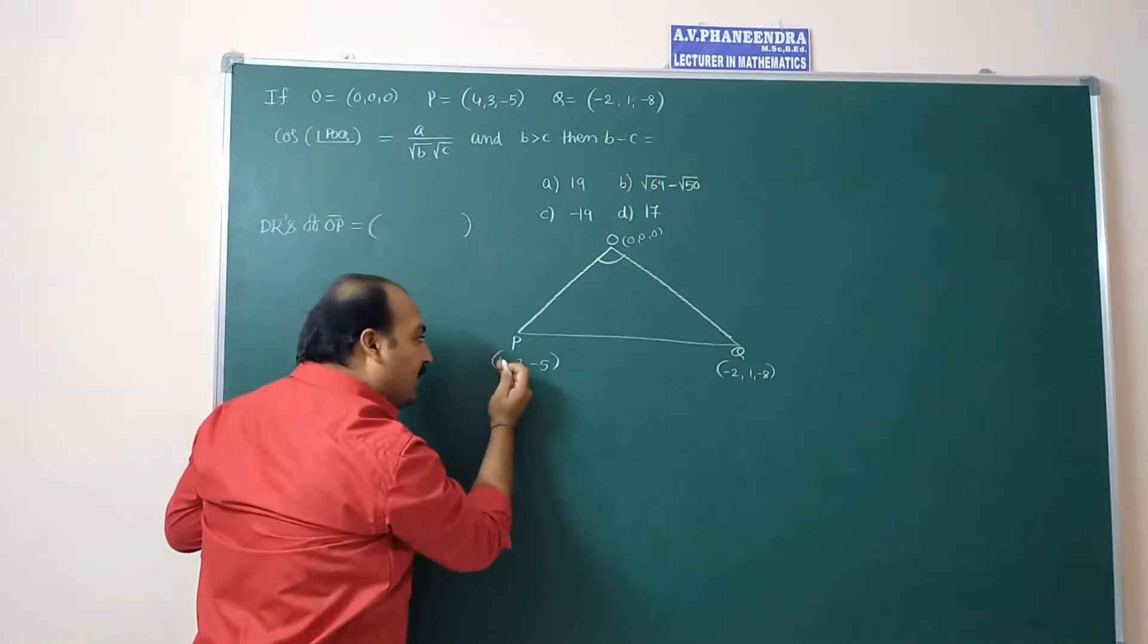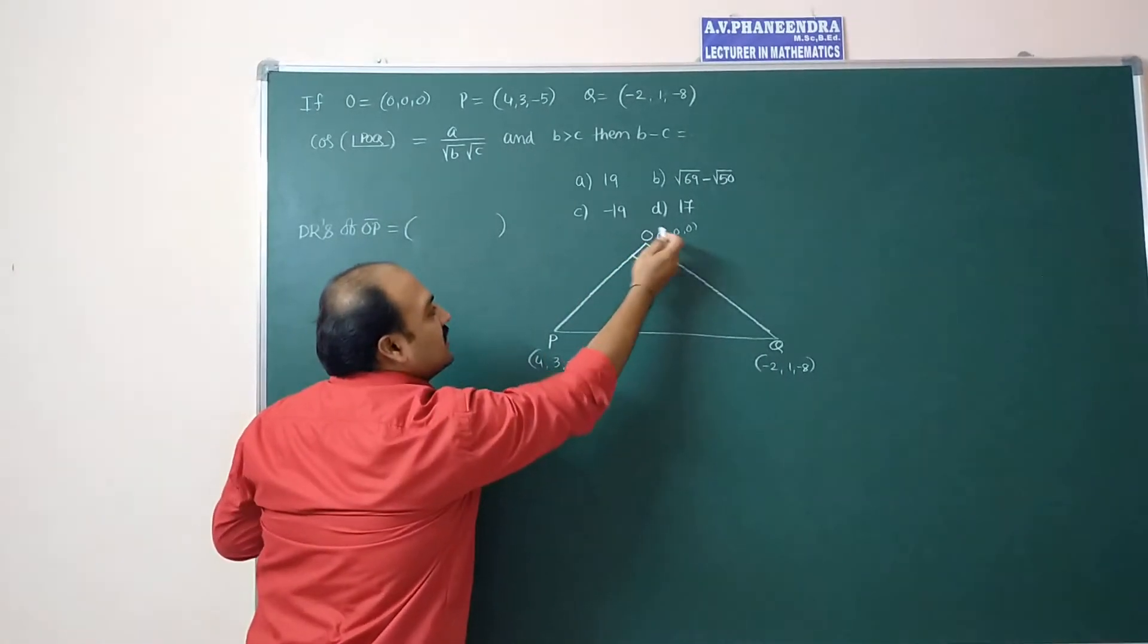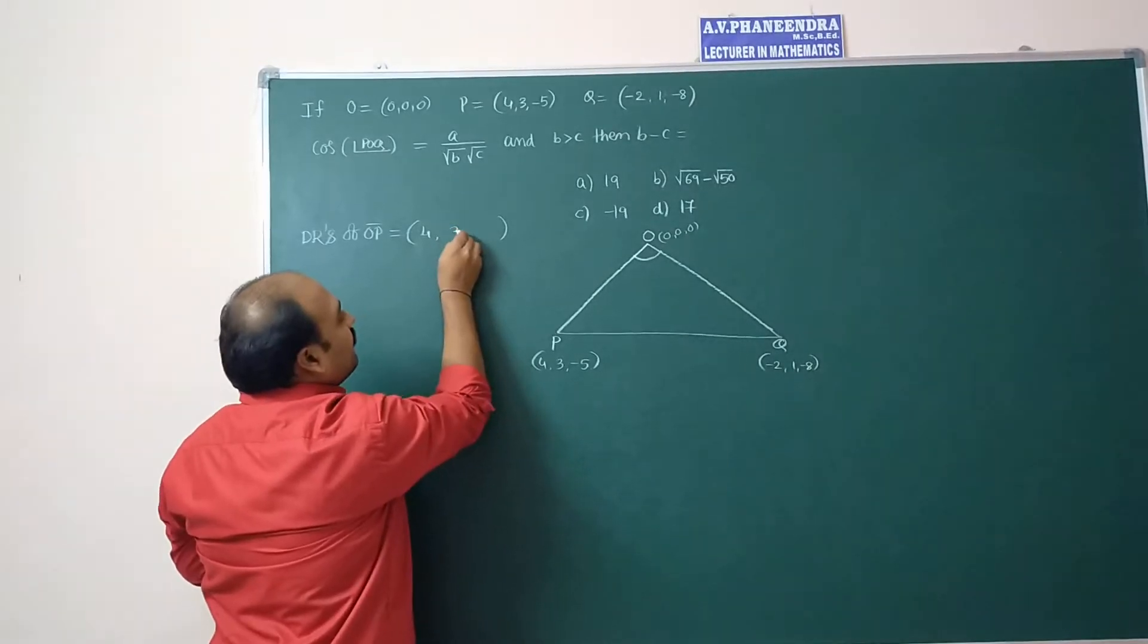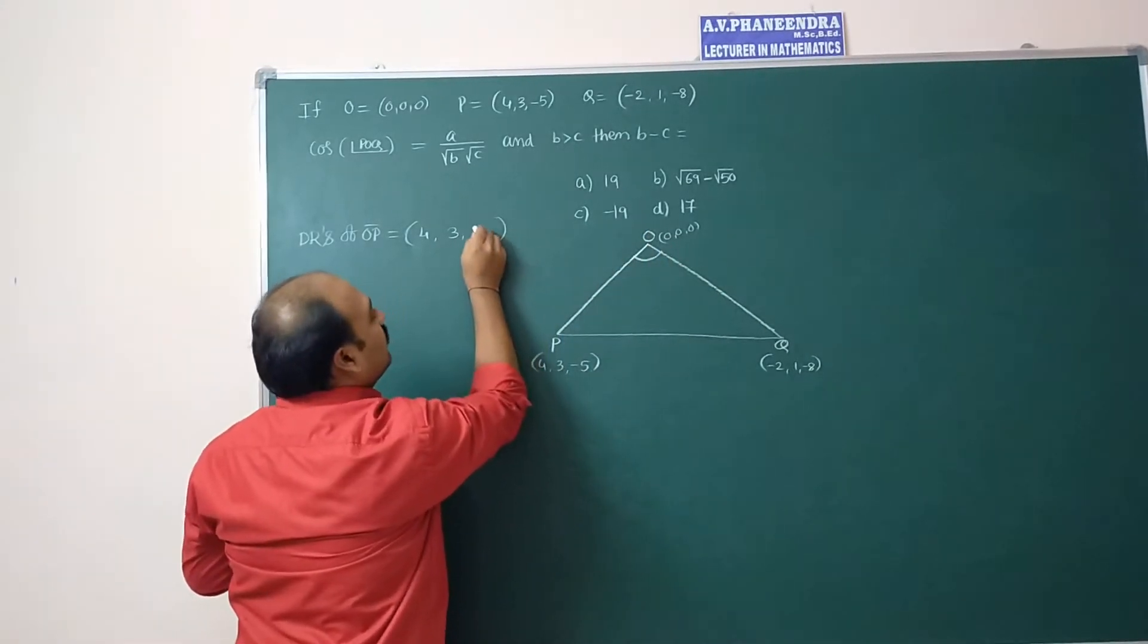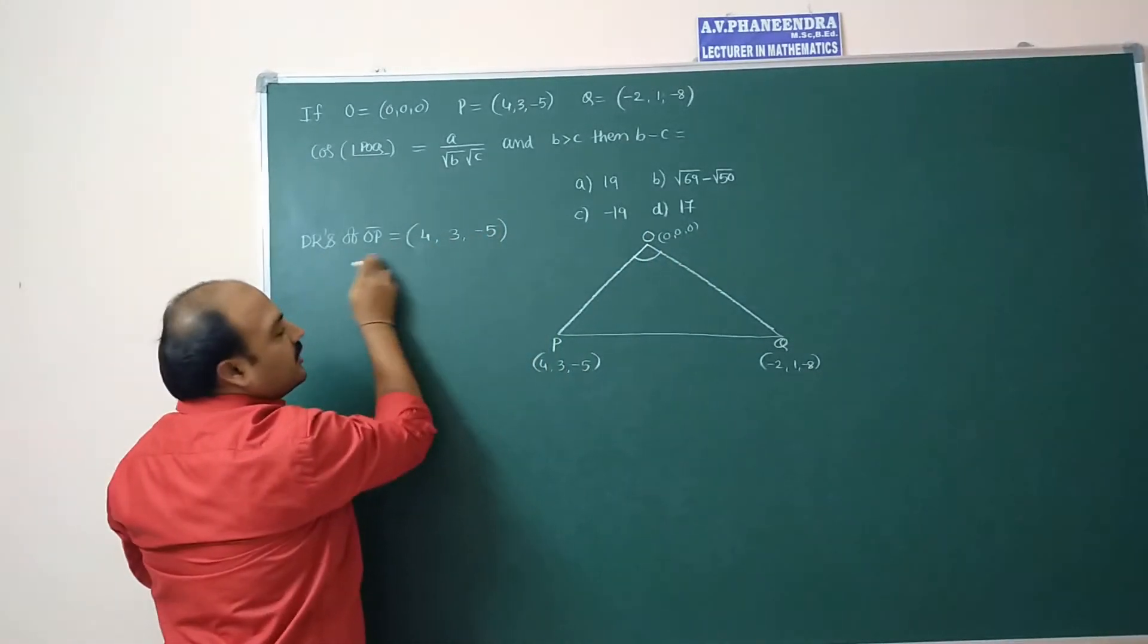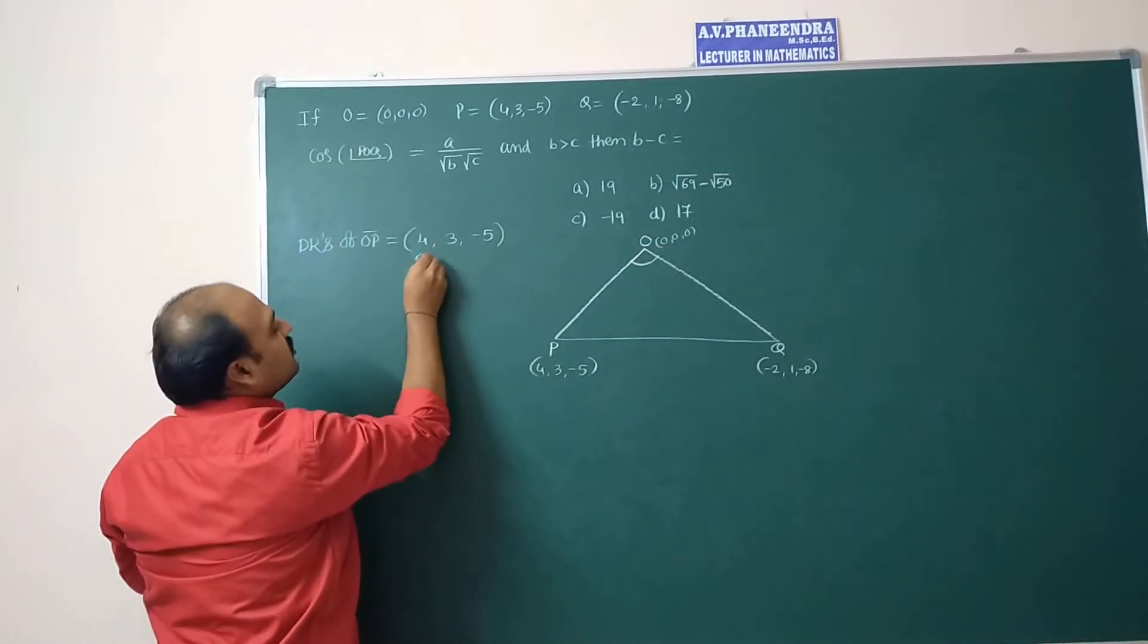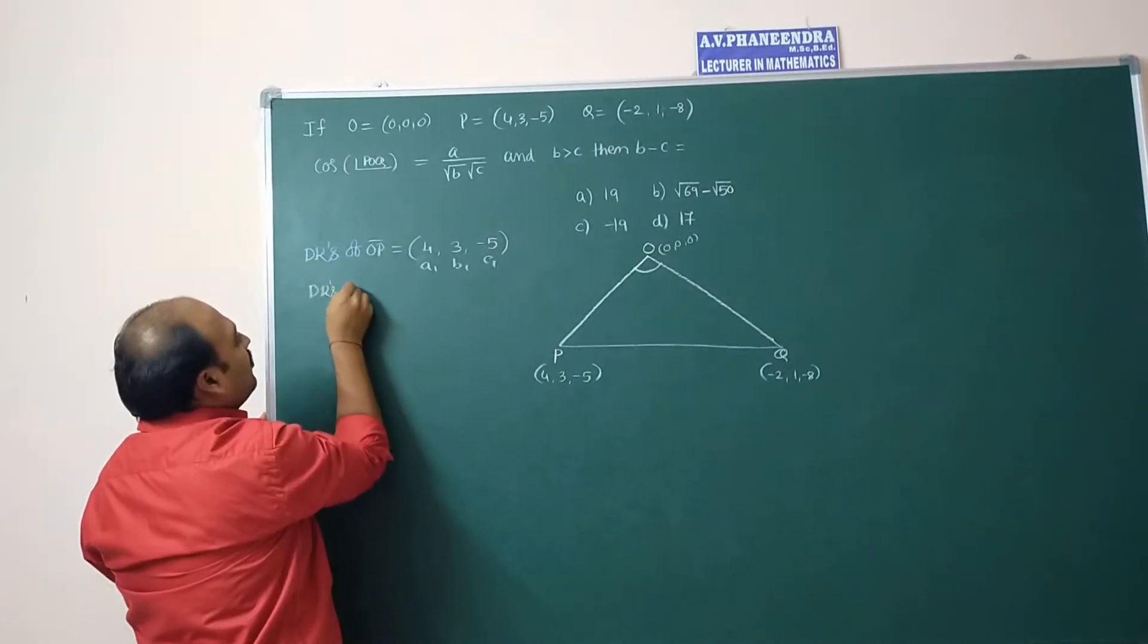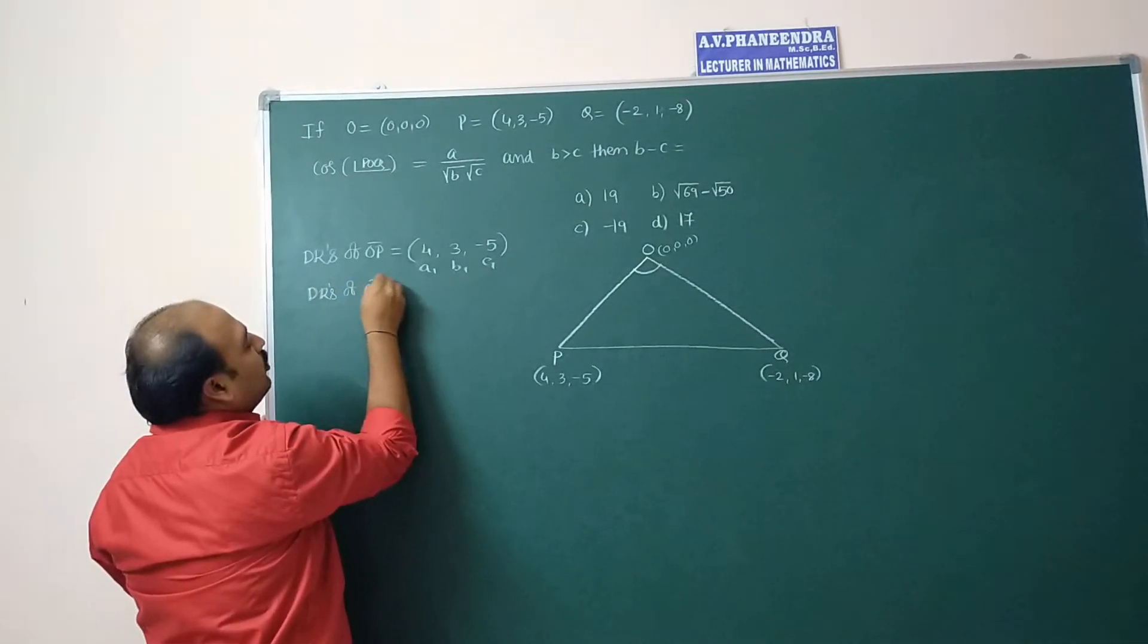OP means P minus O: 4 minus 0, 3 minus 0, minus 5 minus 0. Direction ratios of first side I am assuming that A1, B1, C1.